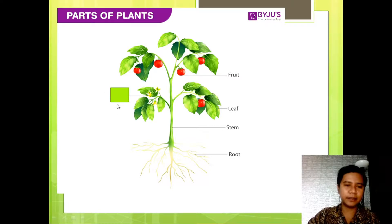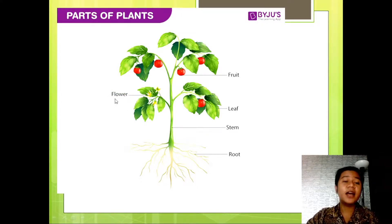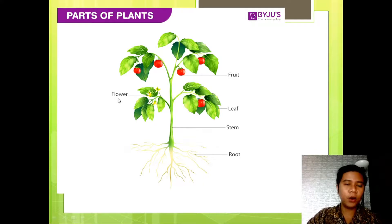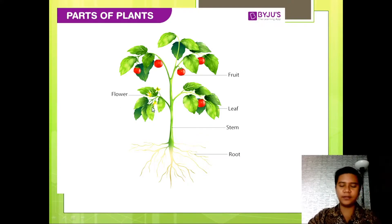How about this — the last part. What part of the plant is this? It's what we call flower. Very good. Flower. Can you spell flower? F-L-O-W-E-R. Flower. Very good.